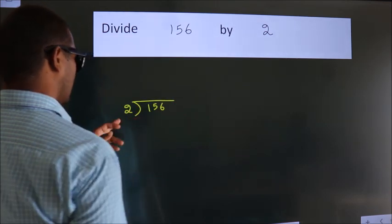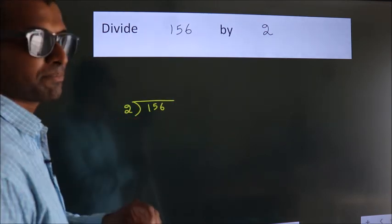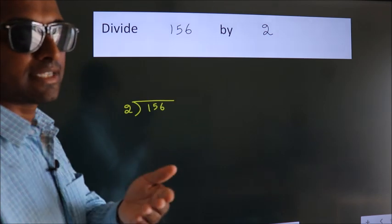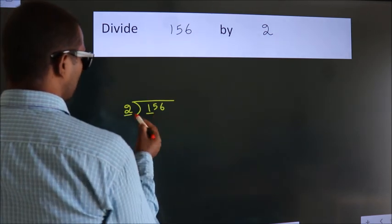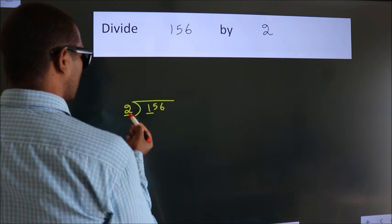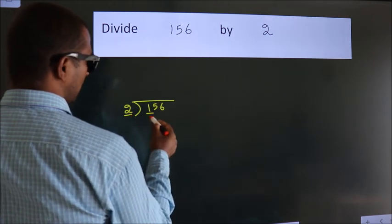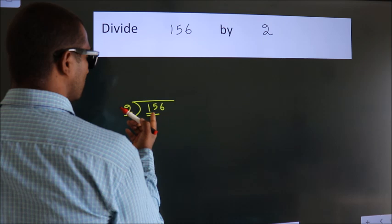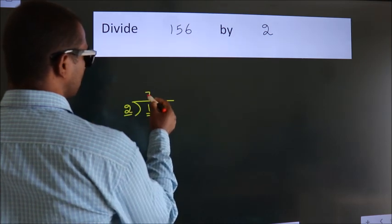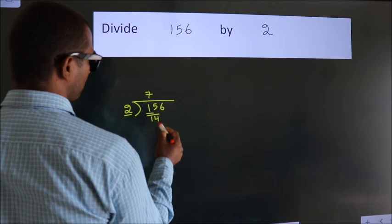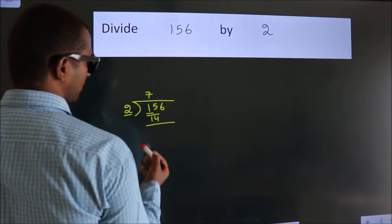2 here. This is your step 1. Next, we have 1 here. 2... 1 is smaller than 2, so we should take two numbers: 15. A number close to 15 in the 2 table is 2×7=14. Now we should subtract.